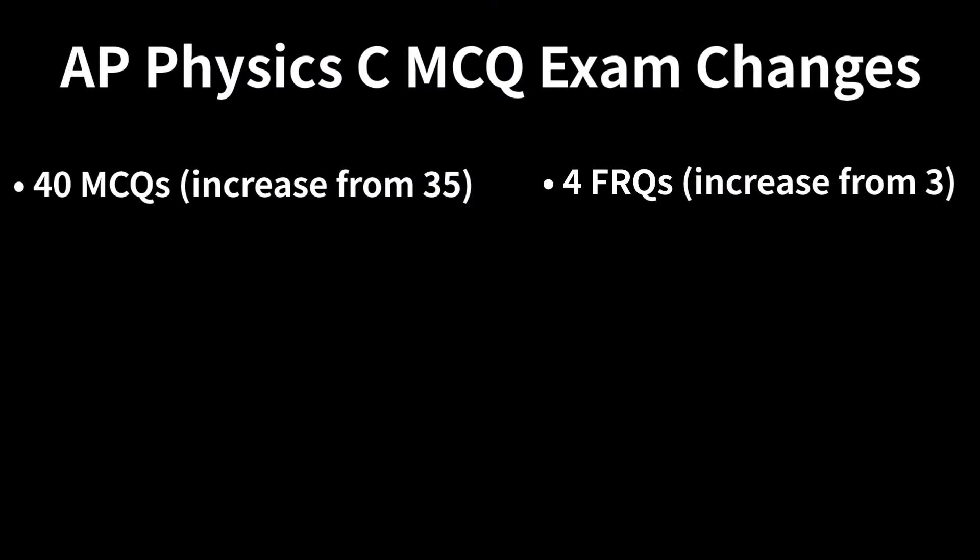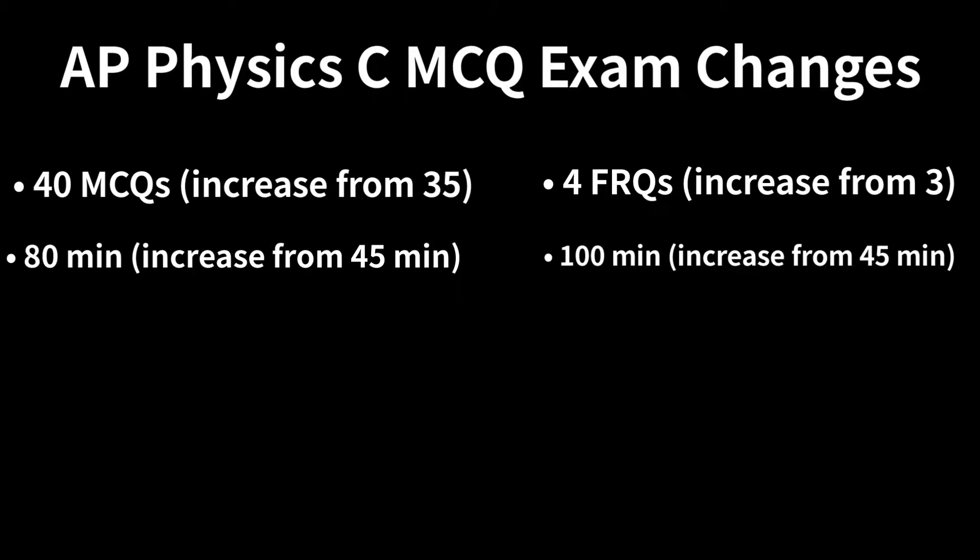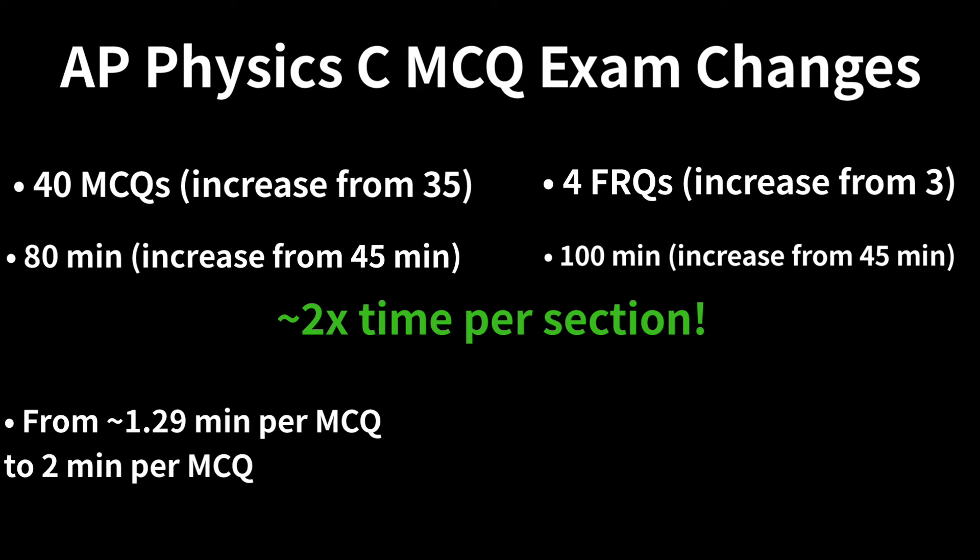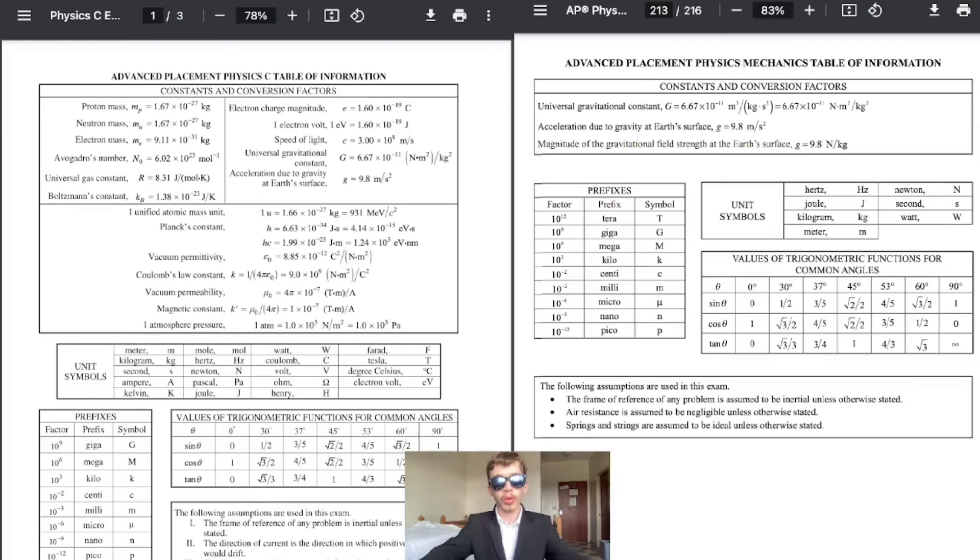In exchange however the time for MCQ section 1 and FRQ section 2 is increased from 45 to 80 minutes and from 45 to 100 minutes respectively approximately double the original time. In terms of timing per MCQ this increases it from 1.29 minutes per MCQ to 2 minutes per MCQ which should allow students to pace themselves in a more manageable fashion. FRQ time per question will be increasing from 15 to 25 minutes.